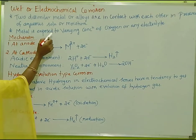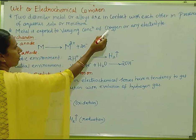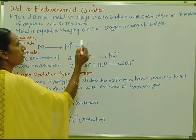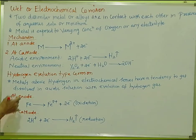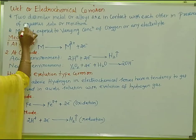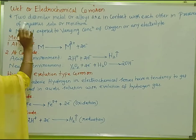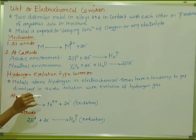The metal is exposed to varying concentrations of oxygen or any electrolyte. Different concentrations of oxygen or electrolyte cause the metals to undergo wet corrosion. These are the two main conditions for wet corrosion.